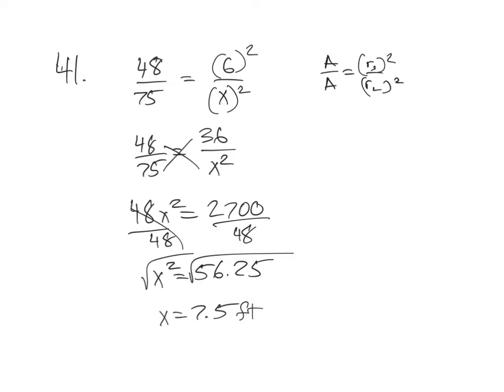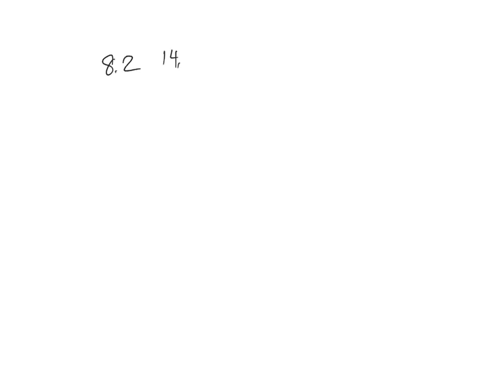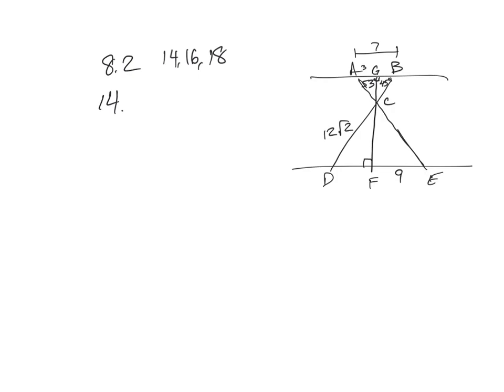Now section 8.2, problems 14, 16, and 18. Number 14: find angle ECF, which is a vertical angle to the angle in the small triangle. That triangle has a 90-degree angle and a 53-degree angle, so the missing angle is 180 minus 90 minus 53, which gives 37 degrees. The vertical angle ECF is therefore also 37 degrees.